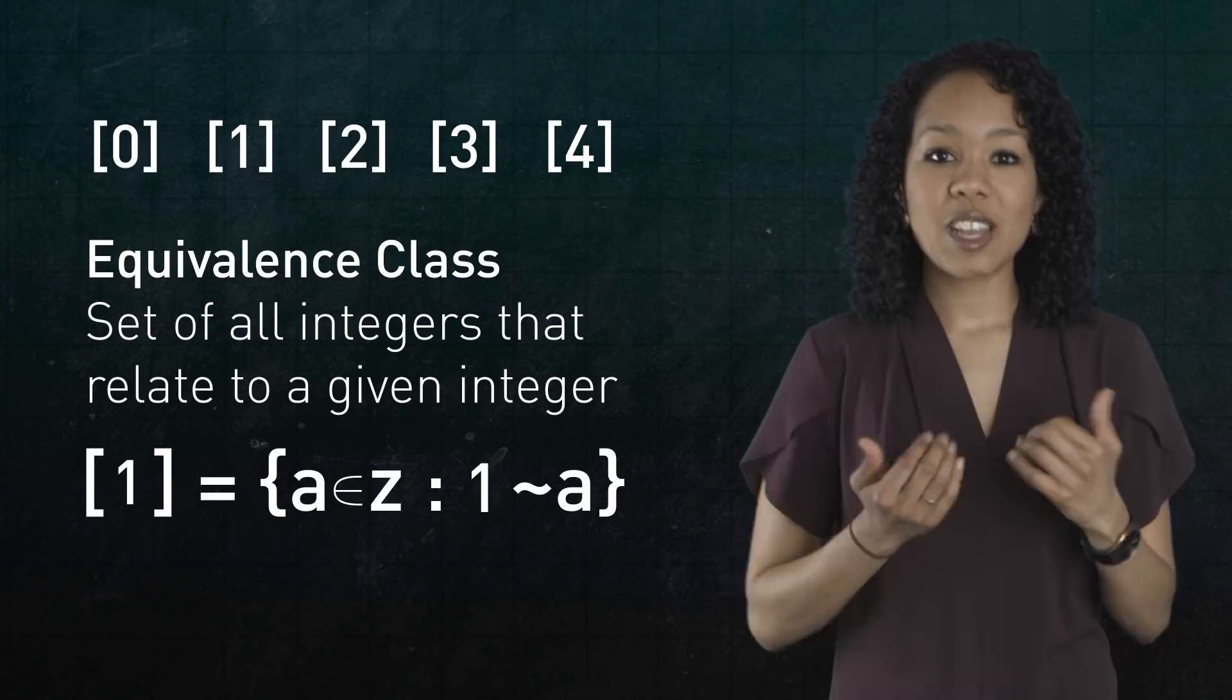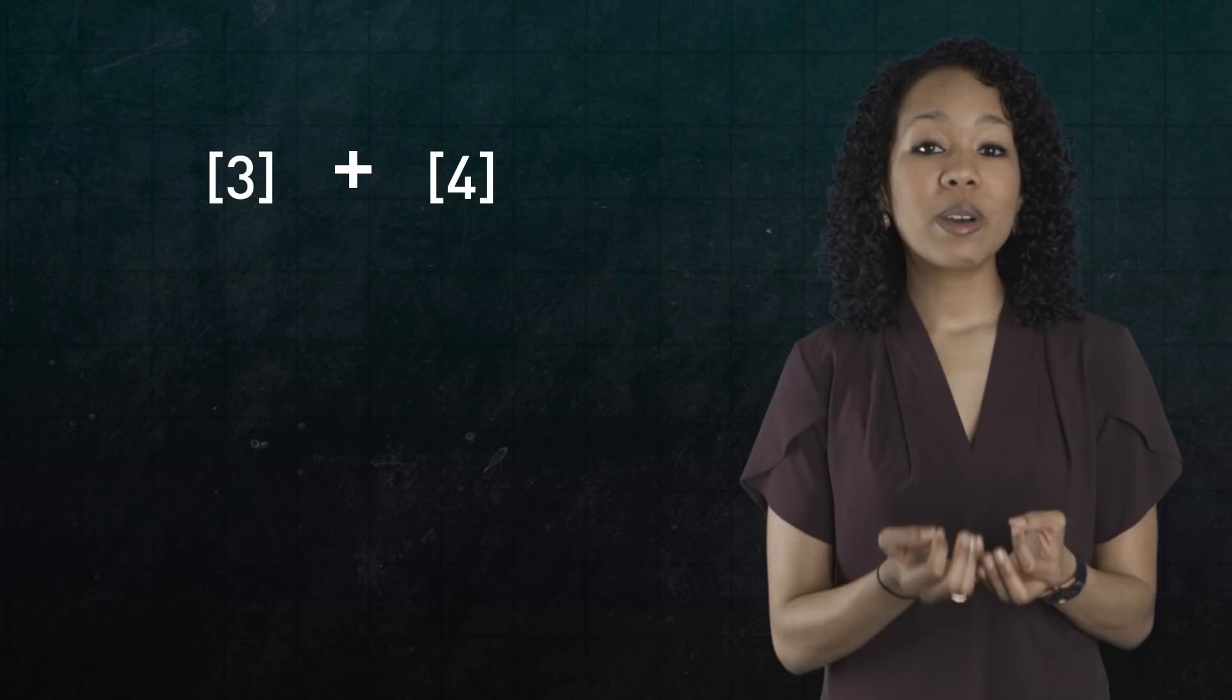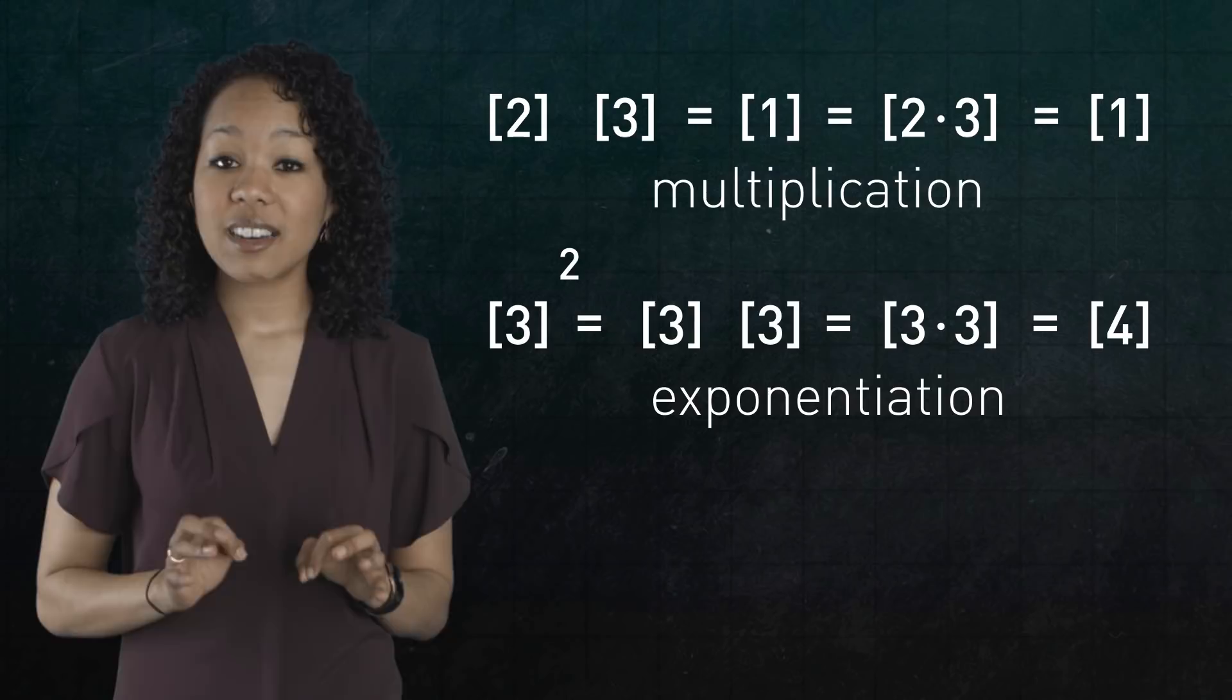And what's neat is that we can do arithmetic with equivalence classes. For example, 3 plus 4 is defined to be the equivalence class 2 because 7 has a remainder of 2 upon division by 5. And other operations in modular arithmetic, like multiplication and exponentiation, can be done on the equivalence classes themselves.